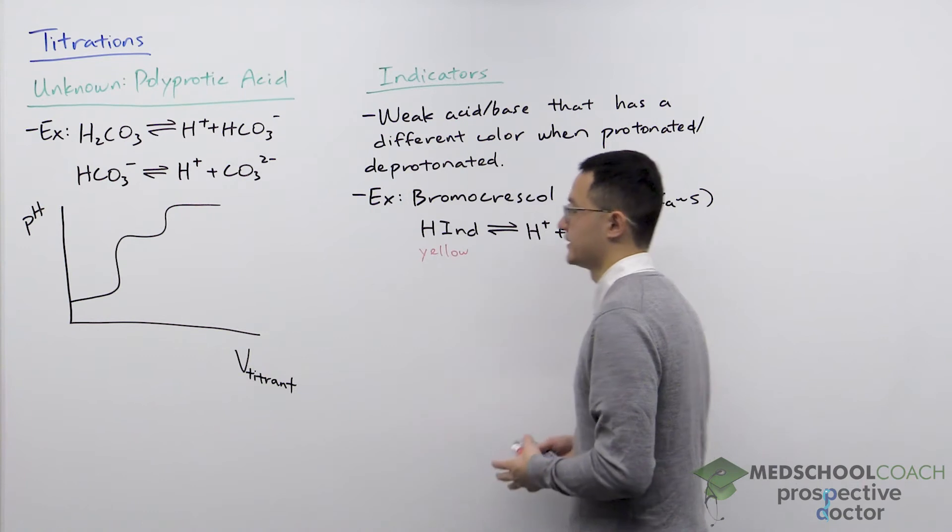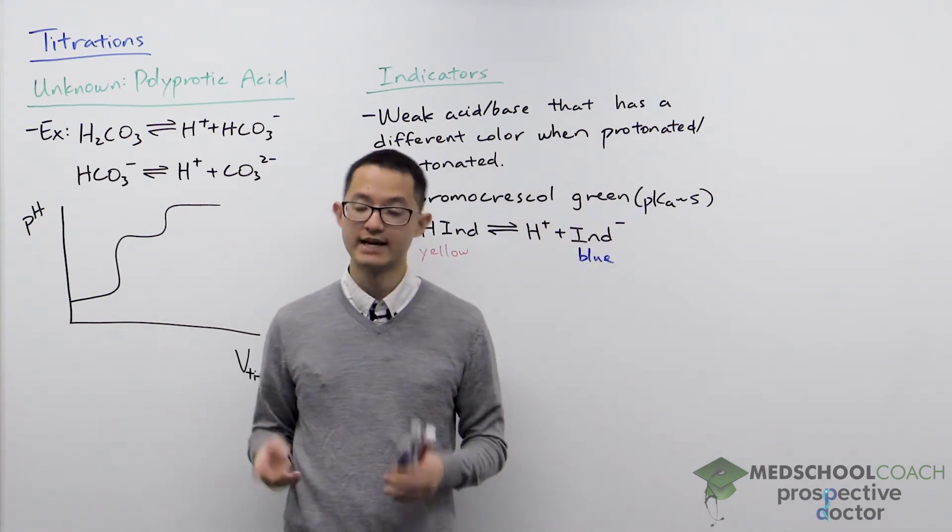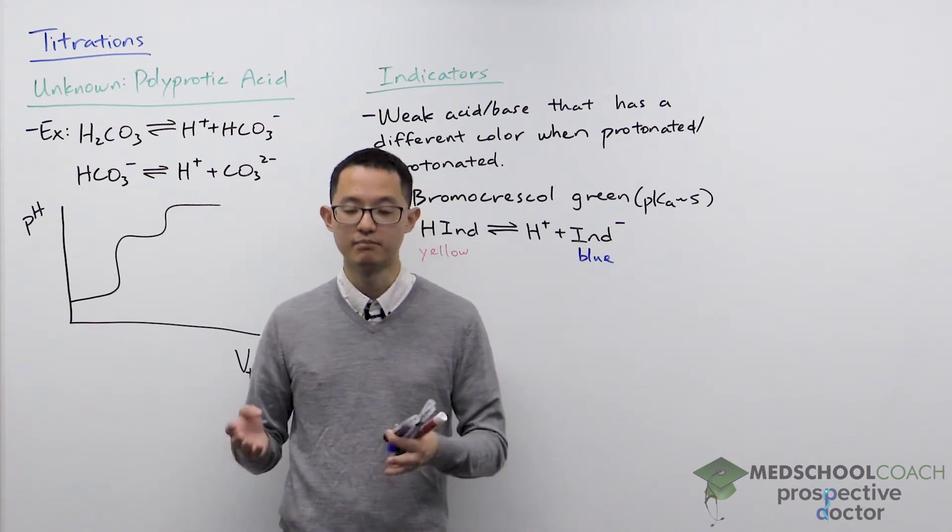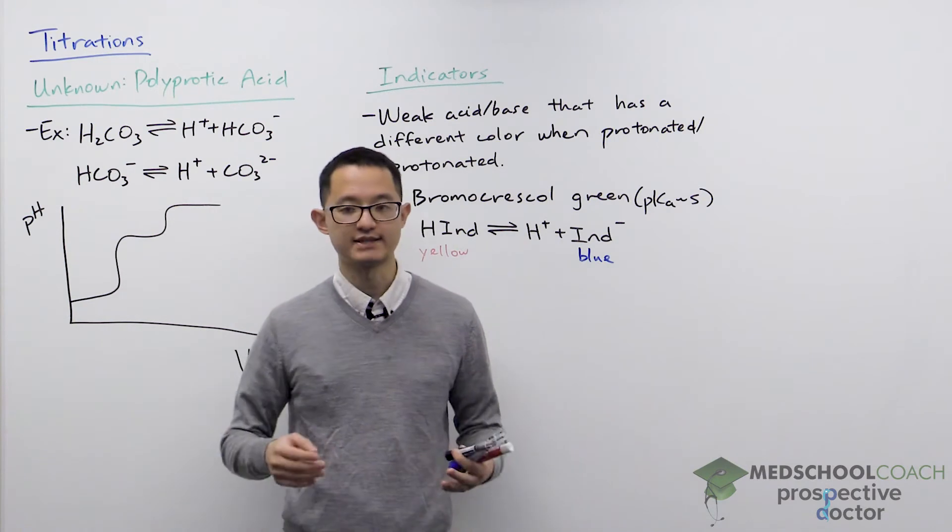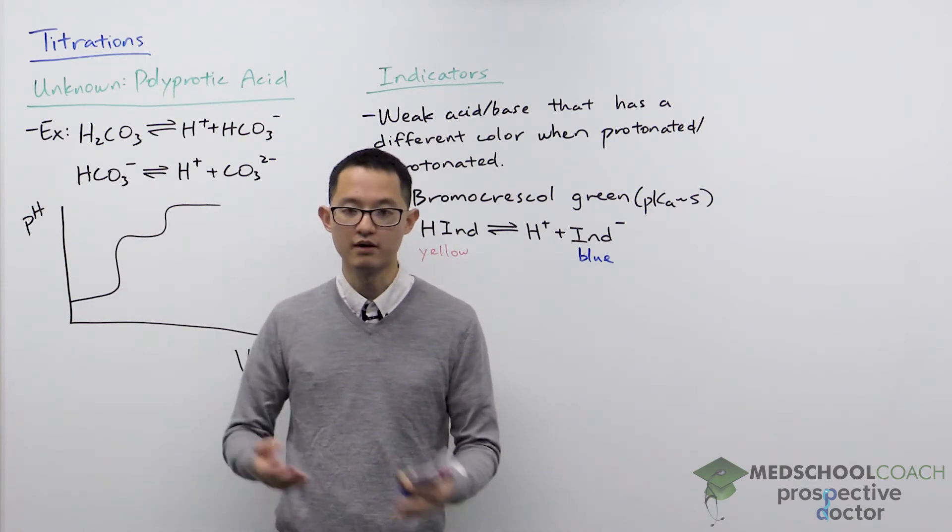If you recall in the last video when we were looking at titration curves, we were looking at monoprotic acids, acids that only dissociate to form one hydrogen ion per molecule. Polyprotic acids are acids that can form more than one hydrogen ion per molecule.